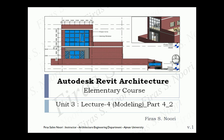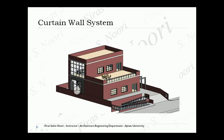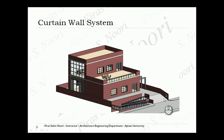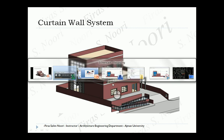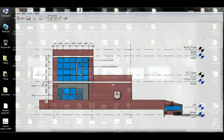In today's lesson we're going to have an Autodesk Revit architecture elementary course — third unit, lecture 4 part 2. We are going to talk about the curtain wall system example and try to model it. We already modeled this building, but we will try to add the curtain wall system to it, making divisions, adding a window, a door, and some panels with different settings.